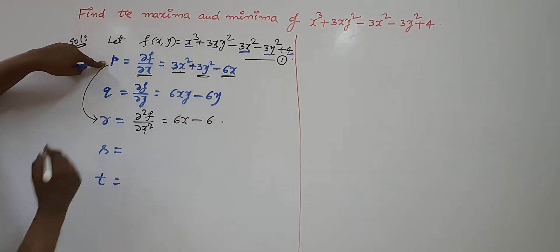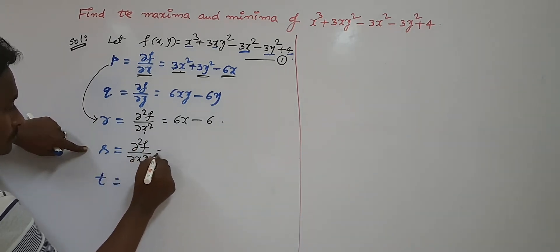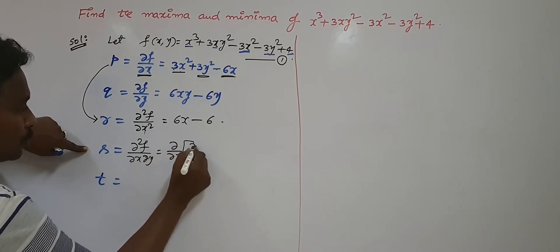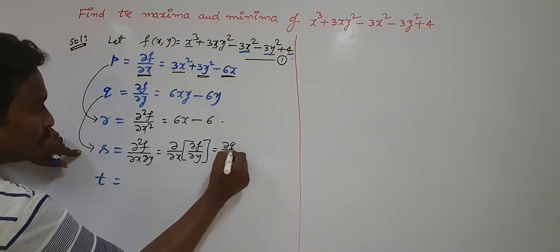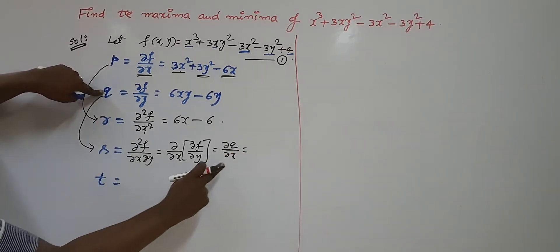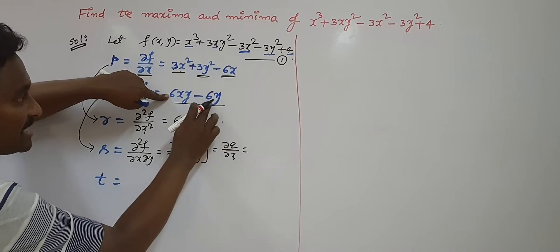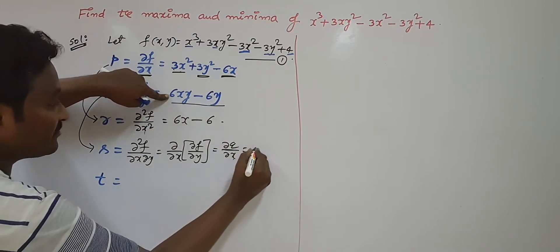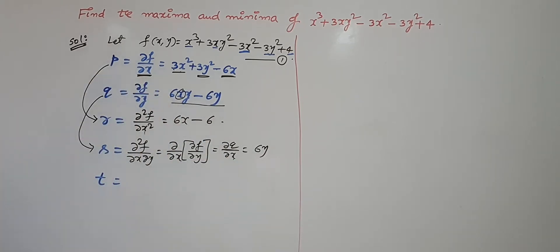Now s = ∂²f/∂x∂y = ∂/∂x of (∂f/∂y). What is ∂f/∂y? That is q = 6xy - 6y. Taking the partial derivative of q with respect to x: 6y is constant, and the derivative of 6xy with respect to x is 6y. So s = 6y. Basic knowledge of partial derivatives is very important.